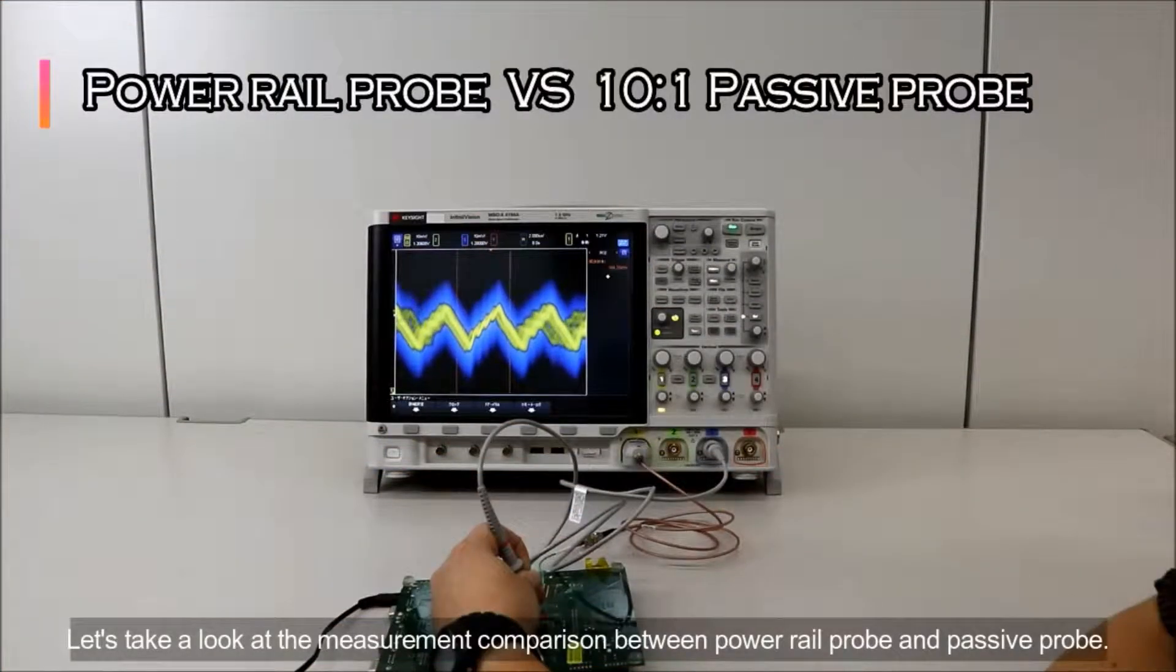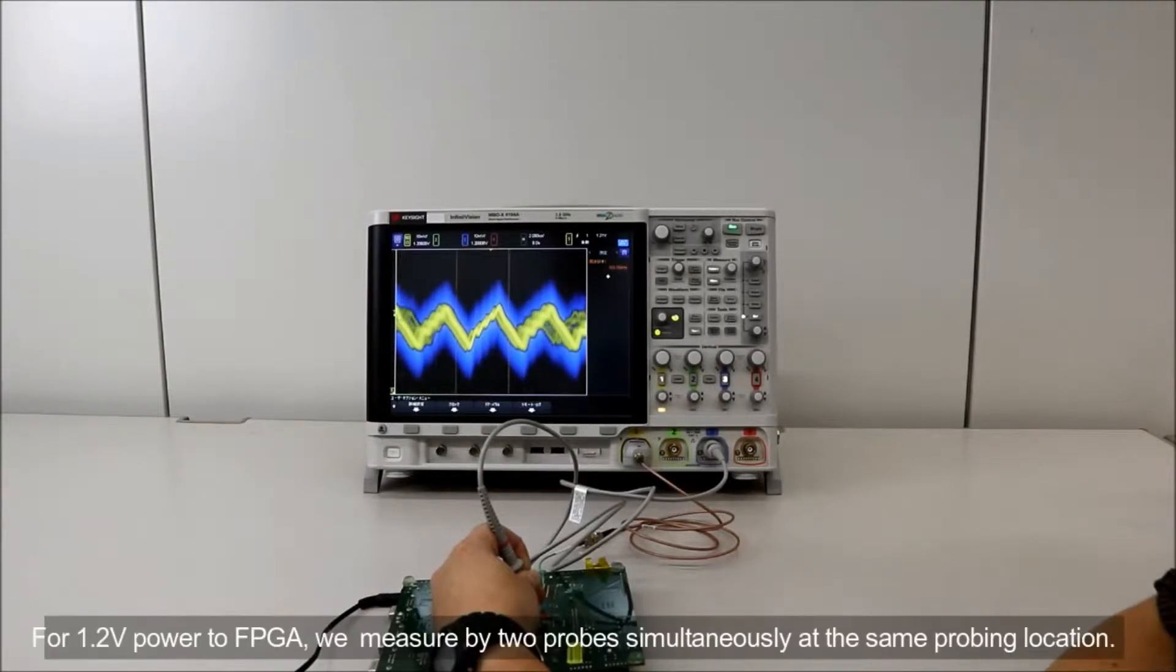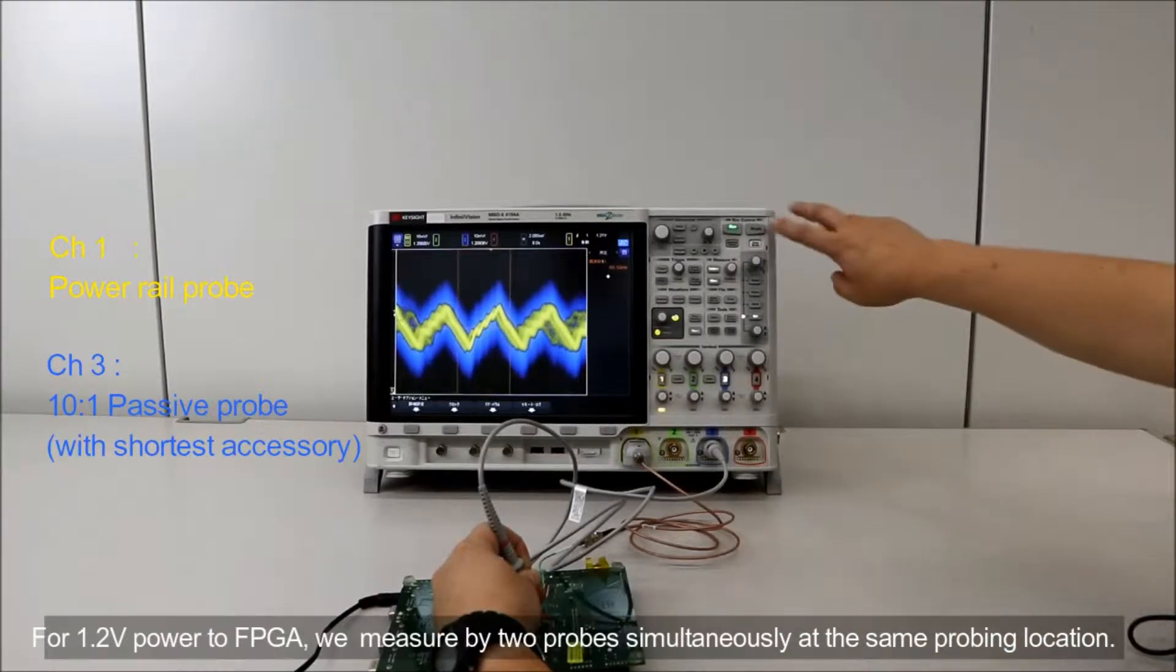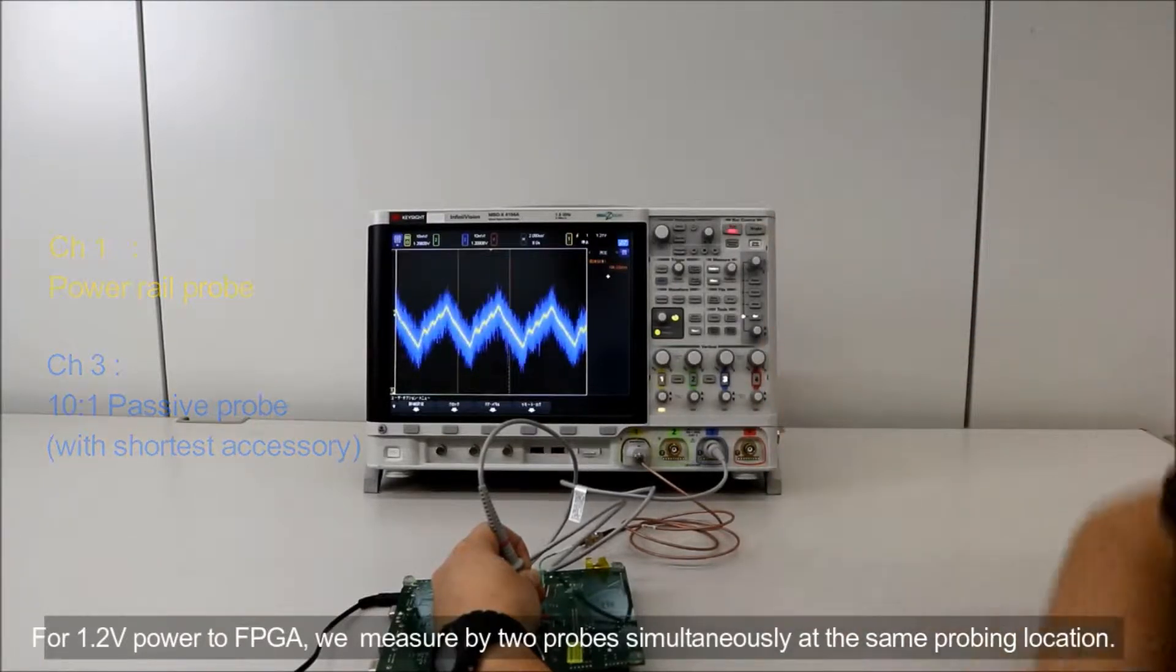Let's take a look at the measurement comparison between PowerRail probe and passive probe. For 1.2V power to FPGA, we measure by two probes simultaneously at the same probing location.